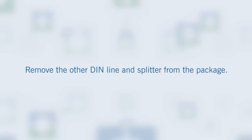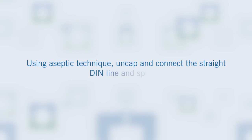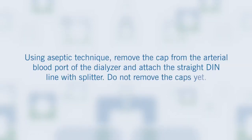Step 7: Remove the other DIN line and splitter from the package. Step 8: Using aseptic technique, uncap and connect the straight DIN line and splitter. Step 9: Using aseptic technique, remove the cap from the arterial blood port of the dialyser and attach the straight DIN line with splitter. Do not remove the caps yet.